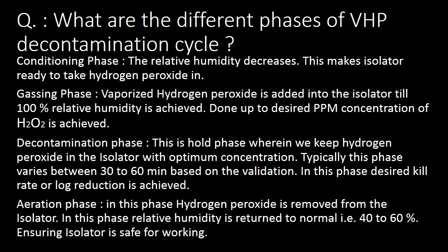The second phase is the gassing phase. In this phase, vaporized hydrogen peroxide is added into the isolator until 100% relative humidity is achieved, up to the desired ppm concentration of H2O2 is reached inside the isolator.